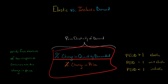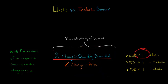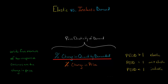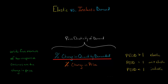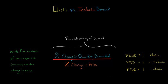If we calculate that formula and it gives us a number greater than one, we say that demand for the good is elastic, meaning customers are very responsive to a change in price. If the price elasticity of demand equals one, we say it's unit elastic — a one percent decrease in price leads to a one percent increase in quantity demanded. However, if the formula gives us a number less than one, demand for the good is inelastic, meaning customers aren't that sensitive to a change in price.